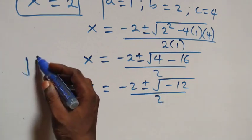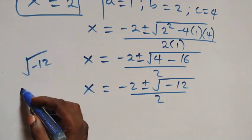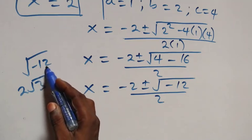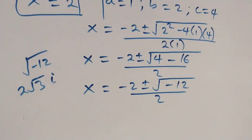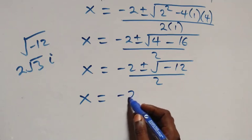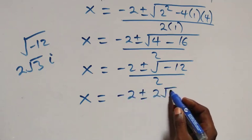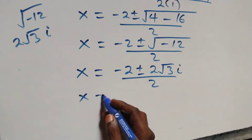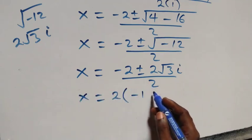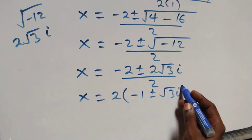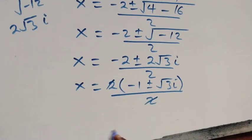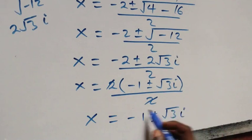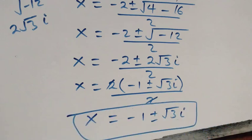Now √(minus 12) is the same as 2√3·i, because minus 12 = 4 times 3 times minus 1, and √4 = 2. So we have x equals (minus 2 ± 2√3·i) over 2. Since 2 is common, x equals 2(minus 1 ± √3·i) over 2, and the 2s cancel. This gives x equals minus 1 plus or minus √3·i — two more complex solutions.